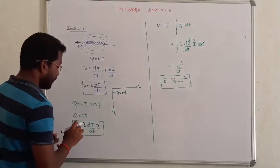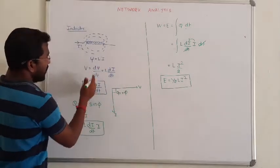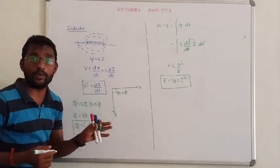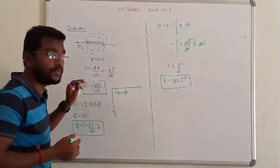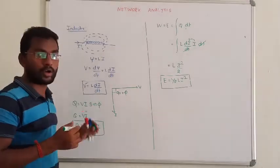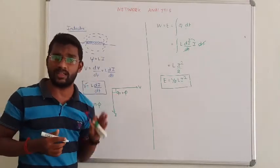If you see the relation, what is the relation between voltage and current? V is equal to L into di by dt. This relation is valid and the relation is always linear, clear?